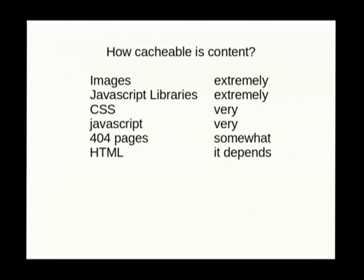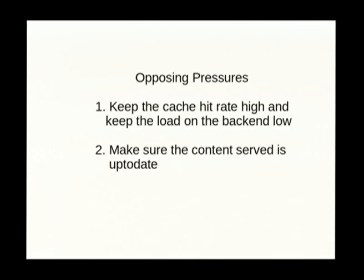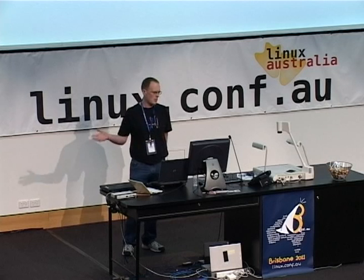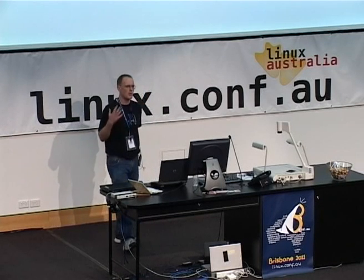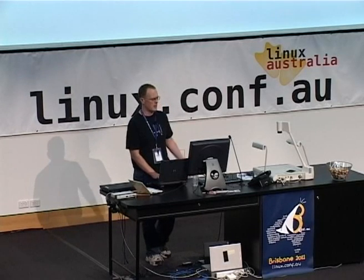How cacheable is content? In general, the first four types are in most cases static files sitting on a file system that you can just generate in seconds, and you don't care. The bottom two are hard to cache, hard to generate, and expensive to generate. So you've got two opposing pressures with a cache server: you've got to keep your hit rate high on the front so you don't overload your back end, but at the same time you've got to keep your content nice and fresh. Depending on your site there is a funny balance with lots of trade-offs.